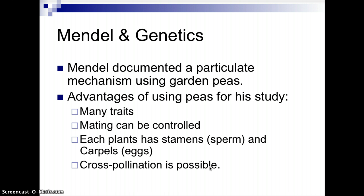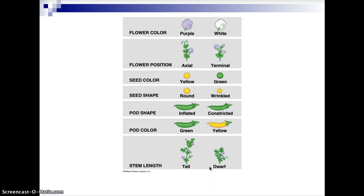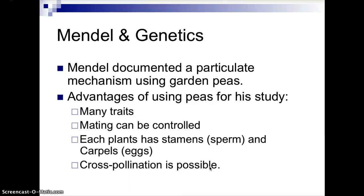So Mendel and genetics. Mendel documented a particulate mechanism using garden peas — Pisum sativum is the scientific name. Advantages of using peas for the study included that peas exhibit many traits, and mating can also be controlled. You can control the mating between plants to ensure that you're only crossing one or two traits by covering up the flowers with a little piece of netting or using a paintbrush to transfer pollen grains from one plant to another.